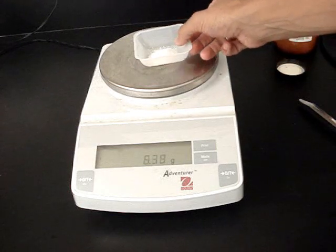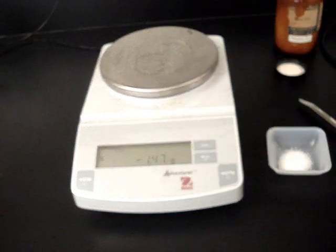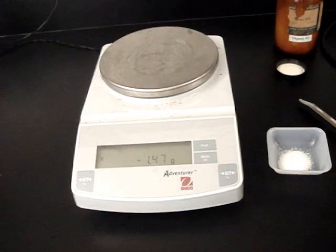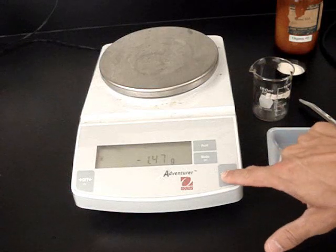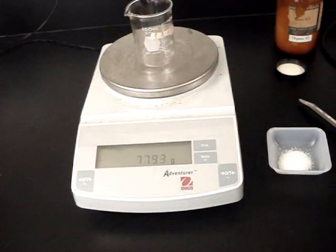So the big thing to remember when you're using the balance is you want the balance to say zero before you put whatever you're measuring. So if I want to measure the beaker, I want to hit zero first. Now I put the beaker on. Now that's the mass of the beaker.